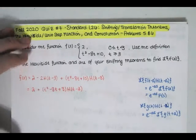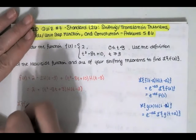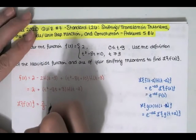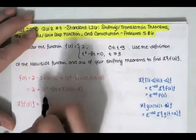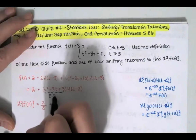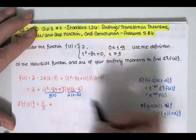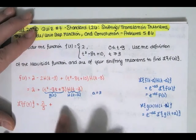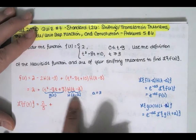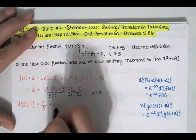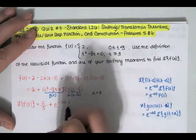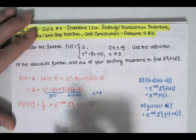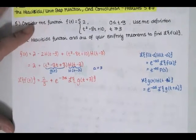Now let's compute the Laplace transform of f of t term by term. The Laplace transform of 2 is just 2 over s. For the second term, we pattern match: this is g of t and this is h of t minus a. If that's the case, then a must be 3. According to this result, the Laplace transform must be e to the negative 3s times the Laplace transform of g of t plus 3. So we take all t's and replace them with t plus 3 and simplify.